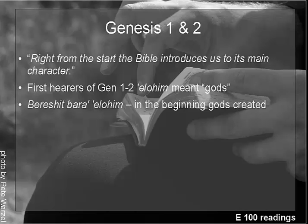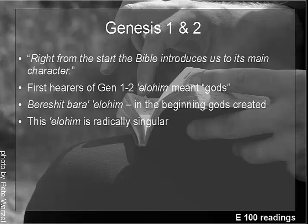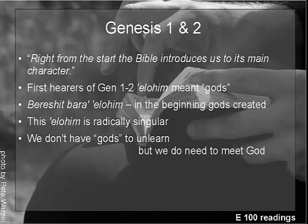What they needed was to discover that the main character was quite strikingly different from what they had always heard, from what they knew. In their world, everyone knew that Elohim was plural — gods — and the world was controlled by a whole bunch of powers: the god of this, the god of that, the god of the other. And here in this chapter they discover gradually that this Elohim is radically singular. Our world is different from that. We don't need to learn that God is singular — that we assume. We need to learn about God; we need to be introduced to the main character of the Bible. We don't have gods to unlearn either way.